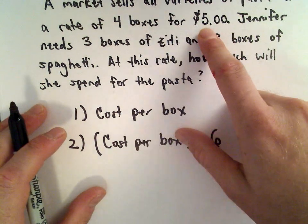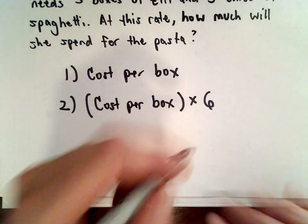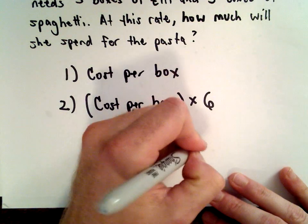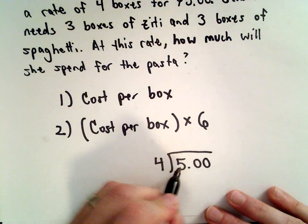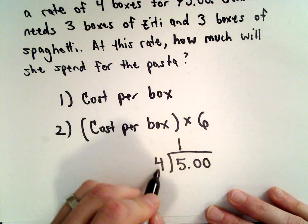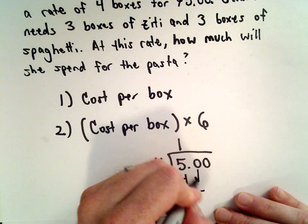Okay well I can do division to figure out the cost per box so I'm going to take five dollars and divide that by four. Well four will go into five one time. One multiplied by four is four. Five minus four is one. We'll drop down to zero.